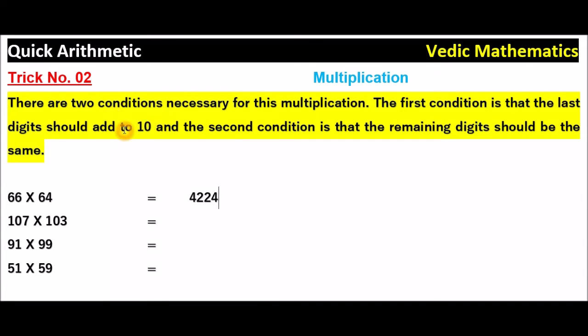There are two conditions, just remember. The unit digits total is 10, 6 plus 4, 10. And the other digits are same, remaining numbers.